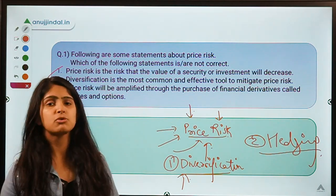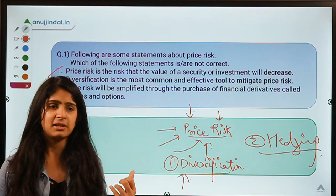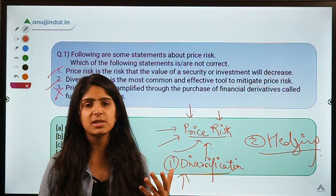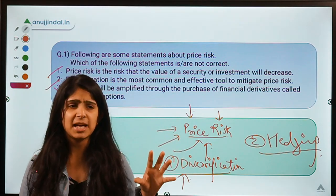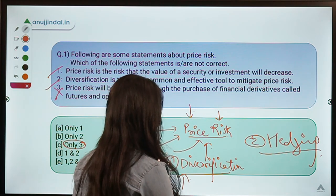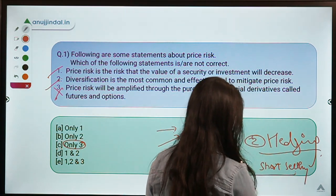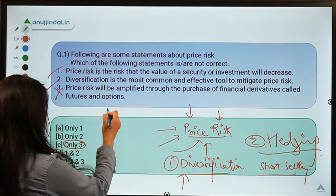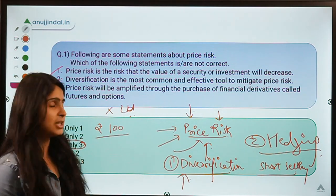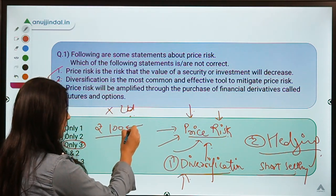Hedging means putting your money into some other investment that is going to safeguard your existing investment. For example, if you have some investments and doubt that the price of a particular share is going to go down, you can indulge in short selling of that particular financial commodity. Let's say there is a company called X Limited, currently priced at rupees 100, but you doubt it might go down.